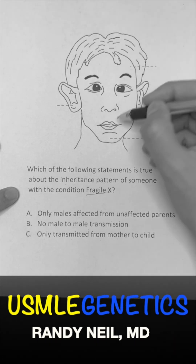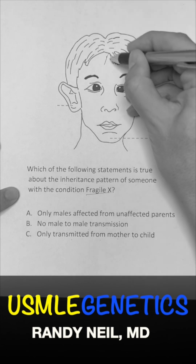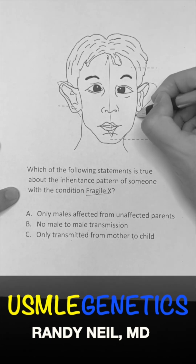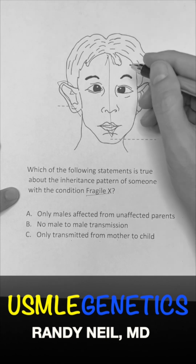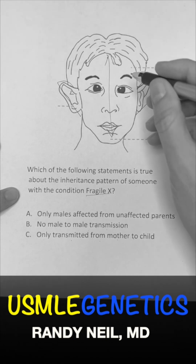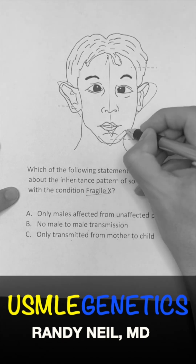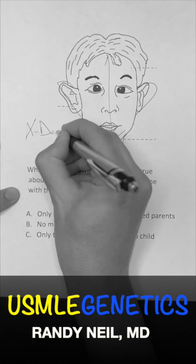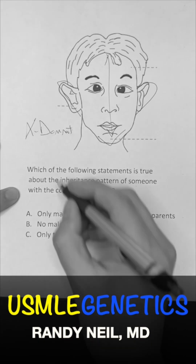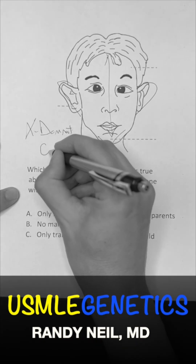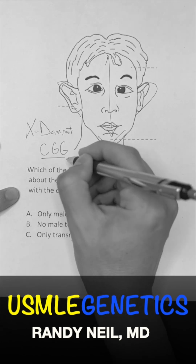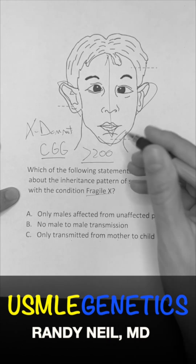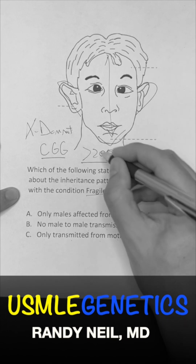In Fragile X, we're going to see a long face, protruding ears, large testicles, gross motor delays, and a prominent chin. The inheritance pattern is X-linked dominant, and it's a CGG trinucleotide repeat — usually look for that number greater than 200.